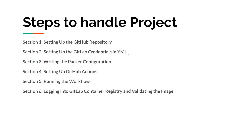The steps we are going to handle in this session: we will be setting up the GitHub repository, then setting up the GitLab credentials in YAML, writing the Packer files, creating the GitHub Actions workflow, doing the run and trigger part, and finally checking whether the registry push to the GitLab container registry is successful.